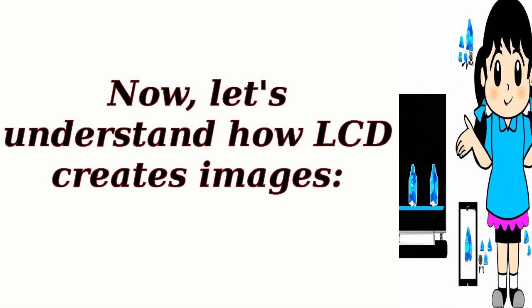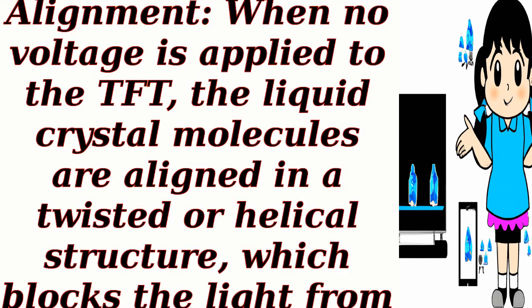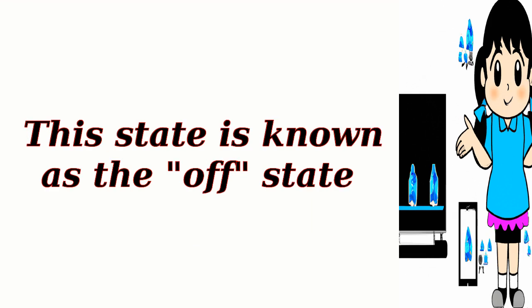Now let's understand how LCD creates images. Liquid crystal alignment: when no voltage is applied to the TFT, the liquid crystal molecules are aligned in a twisted or helical structure, which blocks the light from passing through. This state is known as the off state.